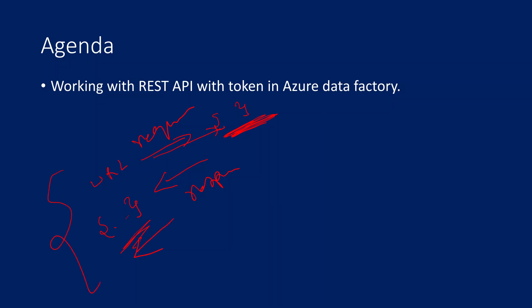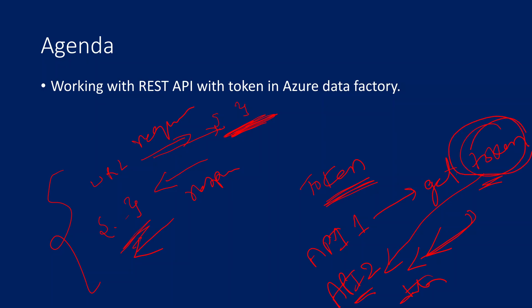In this process when you are doing this request and response using an API call, sometimes what you need to do is supply a token. Token means think like one password or one key. First you need to make an API call — let's call it API1 — and get a token. Once you get this token, you need to make another API call, API2, and get the data. When making this second API call you need to pass this token. This is called token-based authentication.